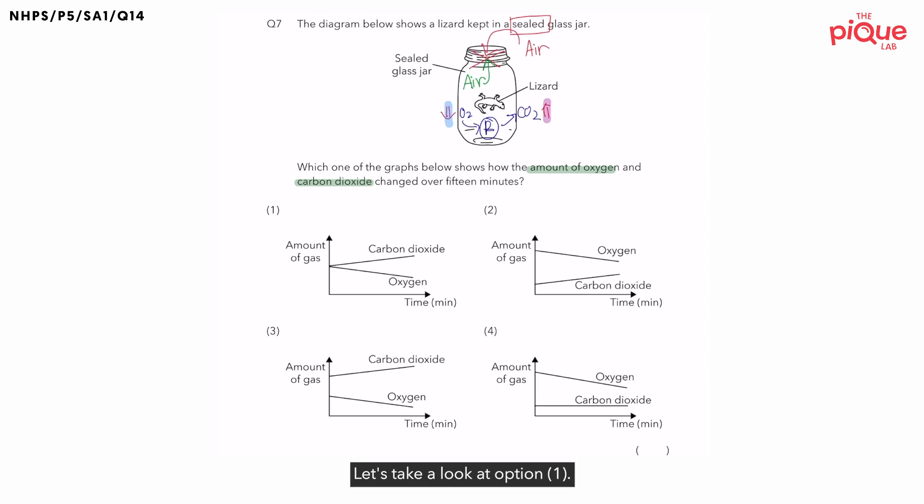Let's take a look at option 1. Is the amount of oxygen decreasing? Yes. Is the amount of carbon dioxide increasing? Yes. Is this what we want? Yes. Therefore, we give option 1 a tick. Let's take a look at option 2. Is the amount of oxygen decreasing? Yes. Is the amount of carbon dioxide increasing? Yes, as well. Therefore, we give option 2 a tick.